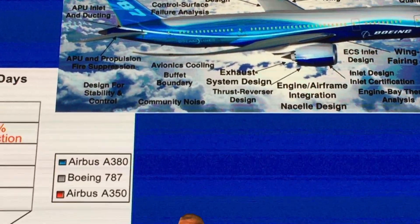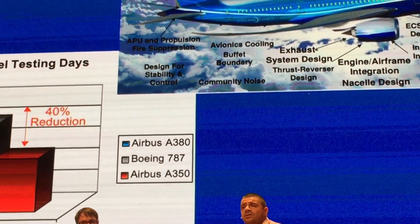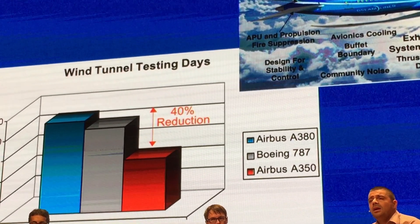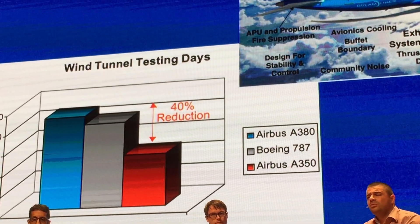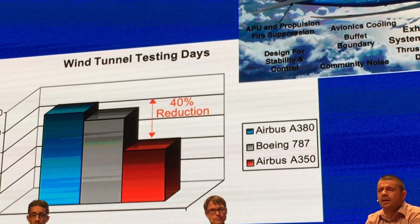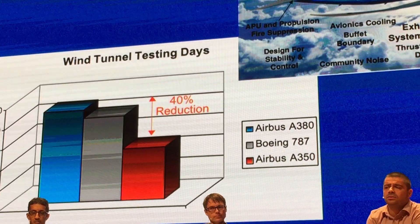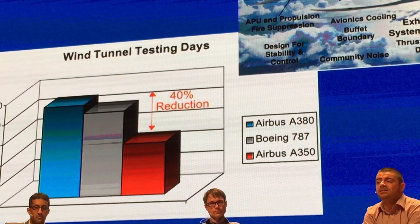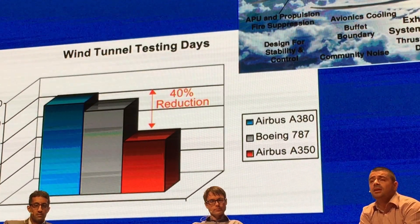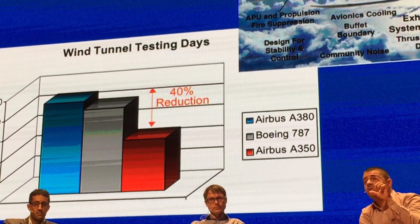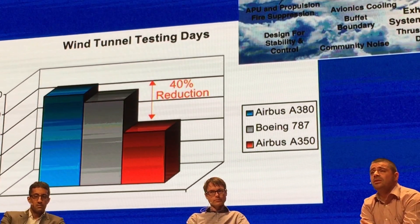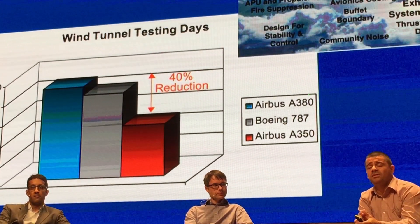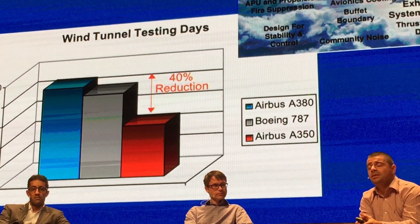Down there you see some graphs showing the reduction between the A340 and the Airbus A380 compared to the Boeing 787. There is a 40% reduction of wind tunnel testing compared to what was done with the 787 and the A380.